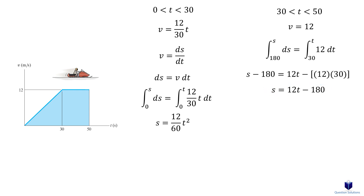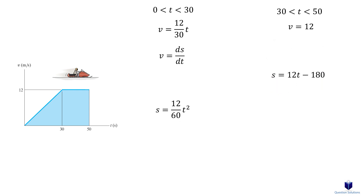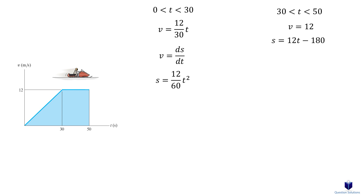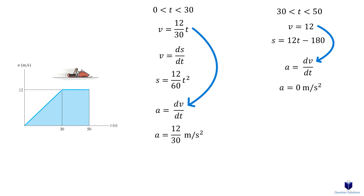Let's focus on acceleration. If the question asks for the acceleration, just take the derivative of your velocity equations, because acceleration is dv over dt. You will get the acceleration equations for each segment. In this example, we get 12 over 30 meters per second squared for the first segment, and 0 meters per second squared for the second segment. You can then plot those versus time.